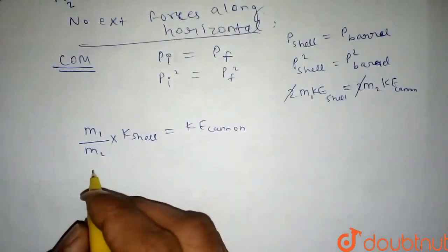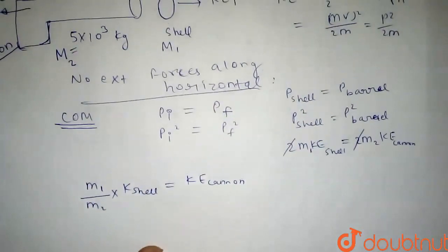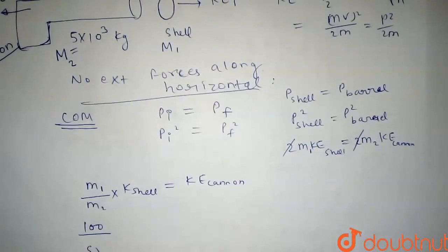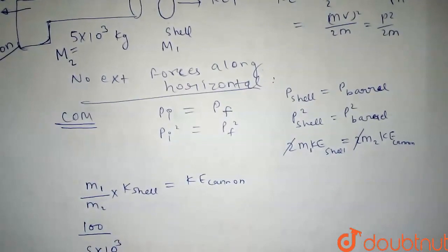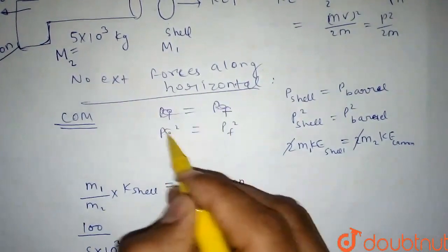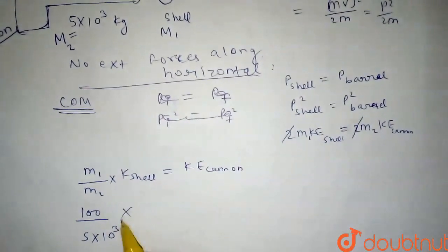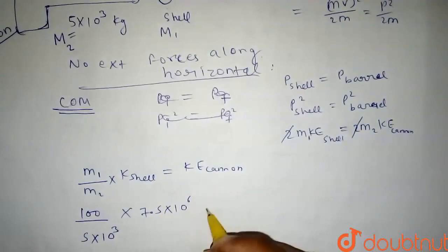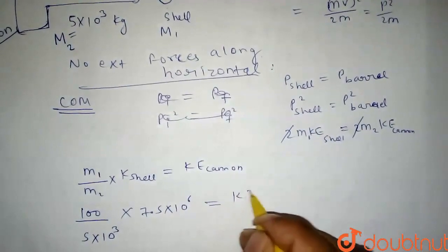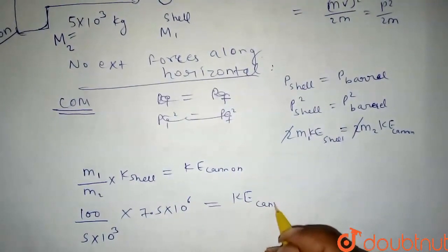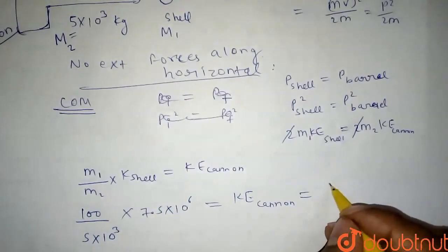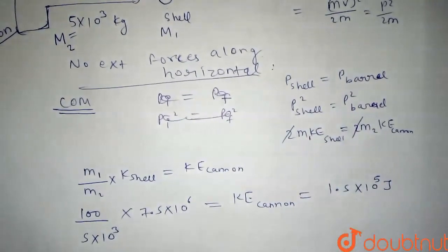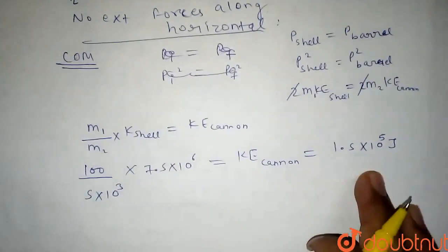So here M1 upon M2: the mass of the shell is 100 kg, and M2 (mass of cannon) is 5×10³ kg. Multiplied by the kinetic energy of the shell, which is 7.5×10⁶ J. So the kinetic energy of the cannon comes out to be 1.5×10⁵ joules.